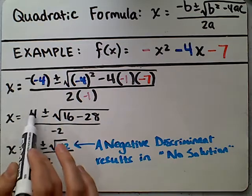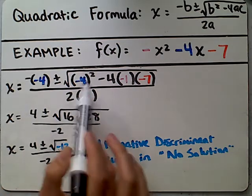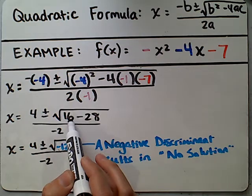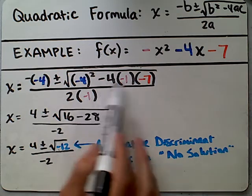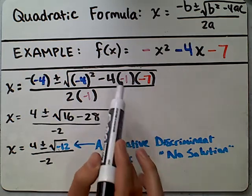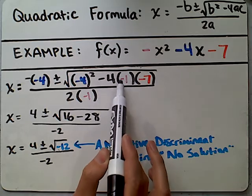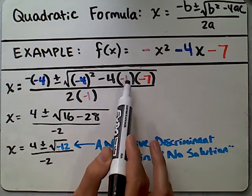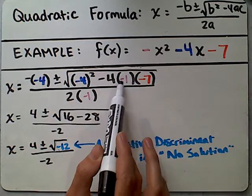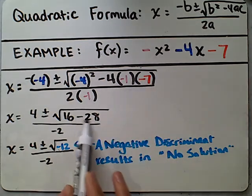So the opposite of negative 4 is positive 4. We simplify that. Negative 4 squared is positive 16. Now this gets a little complicated here. You want to think of this as negative 4 times negative 1 times negative 7. Negative 4 times negative 1 is positive 4. Positive 4 then times negative 7 is negative 28.